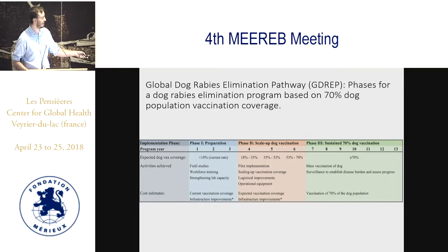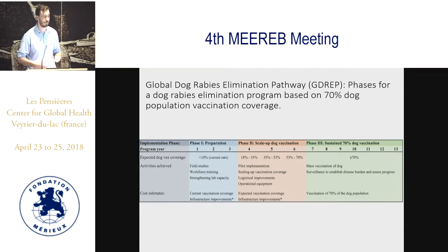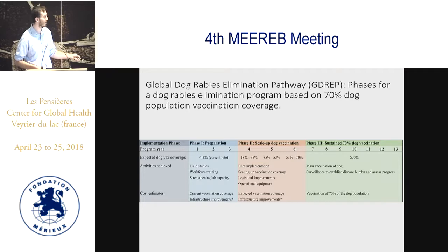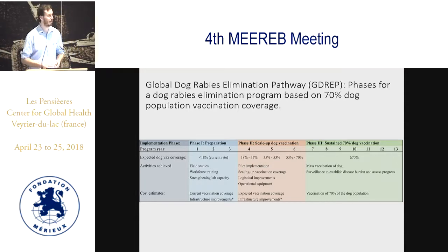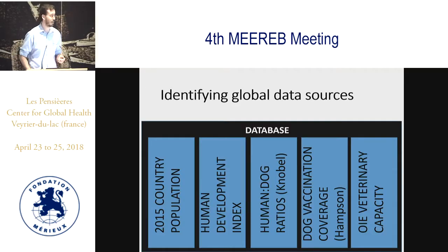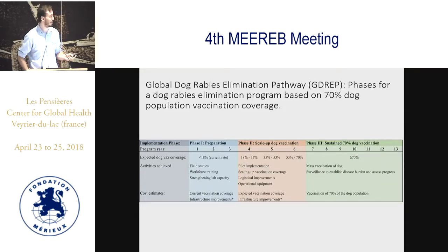You then move into the second three-year phase, which is the scale-up phase, and this is scaling up your vaccination from 18% to about 70%. This is really the implementation phase — vaccinating those animals, scaling it up to the national level, and improving your logistics and vaccination coverage. And then lastly is the sustained vaccination of your dog population for that maintenance period, to maintain that 70% coverage to ensure that you can control and eliminate the disease in your dog population.